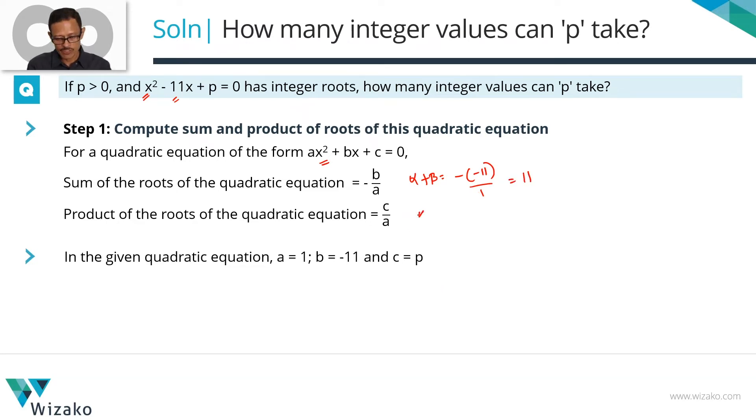Product of the roots alpha beta is equal to c, which in this case is p divided by a equals 1, which is equal to p. We are trying to find out the number of values that p can take with the information that the sum of these two numbers alpha + beta equals 11.